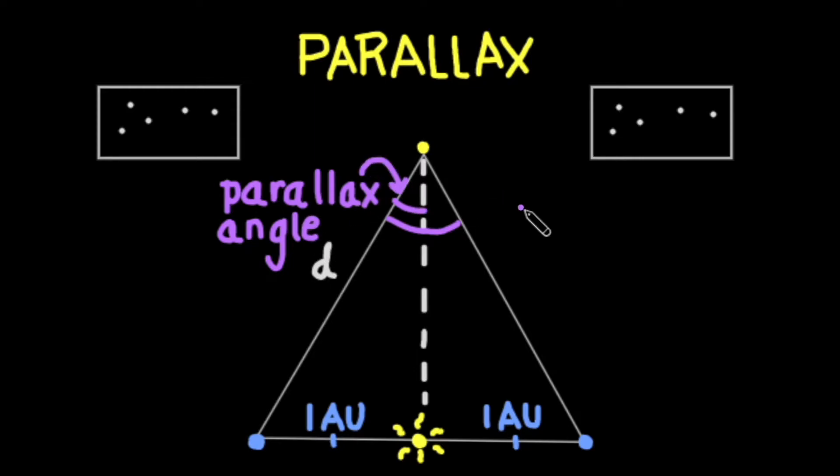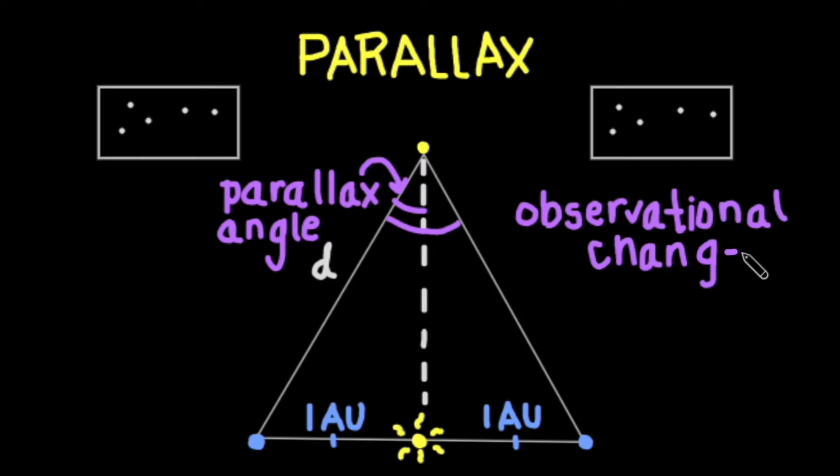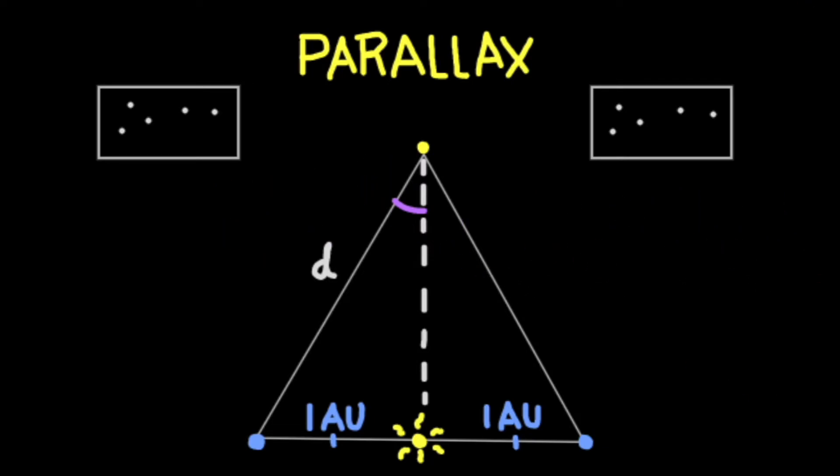The parallax angle is half of the star's apparent motion across the sky. We can then say that the sine of the parallax angle is equal to 1AU over the distance from the Earth to the star.